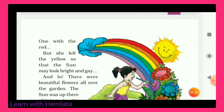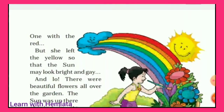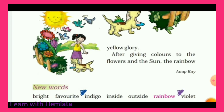And lo, there were beautiful flowers all over the garden. Us ne kaha — lo, garden ke sabhi flowers kitne sundar lag rahe the! The sun was up there with yellow glory — yellow glory means us ki jo sun rays thi, woh bilkul shining brightly chamak rahi thi. After giving color to the flowers, the sun, and the rainbow, her garden had become just like a rainbow, because the rainbow has seven colors and the flowers of her garden also had seven colors.